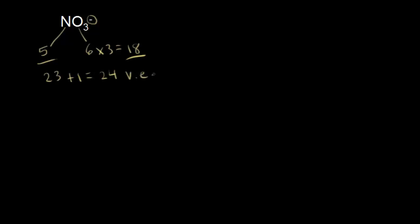Nitrogen is going to go in the center because oxygen is more electronegative. Nitrogen is bonded to 3 oxygens, so I can go ahead and put them in there. How many valence electrons have we represented so far? 2, 4, and 6. Therefore, 24 minus 6 gives us 18 valence electrons left over. We're going to put those leftover valence electrons on our terminal atoms, which are our oxygens.